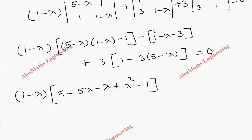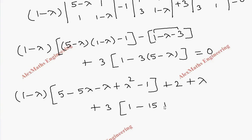Combining terms: 1 minus 3 gives minus 2, but with the outside minus sign it becomes plus 2. The minus lambda becomes plus lambda. Then the last term gives plus 3 times (1 minus 15 plus 3 lambda), which simplifies further.